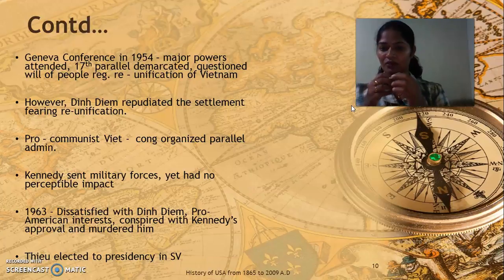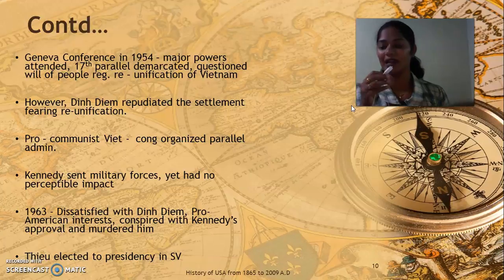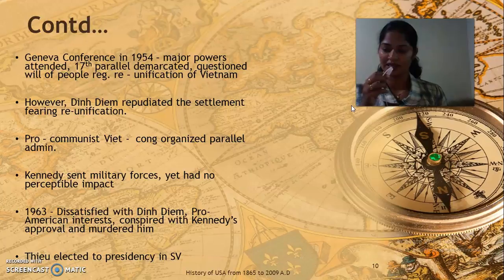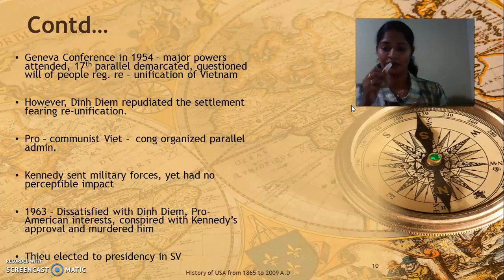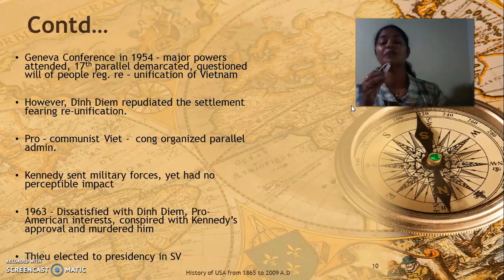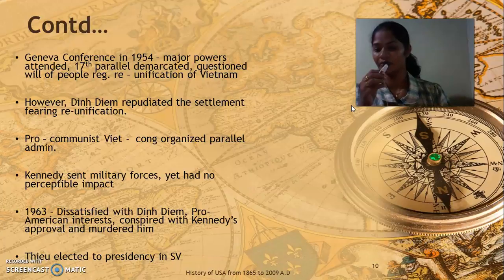This was observed by the American government. At that time, Kennedy was the president. He did not like the attitude of the pro-communist leader — if Kennedy allowed the pro-communist leader's attitude to continue, South Vietnam would be taken over by North Vietnam. So Kennedy sent his military forces to control North Vietnam and prevent the spread of communist ideology to the South. But this attempt had no possible impact and was considered a failure.